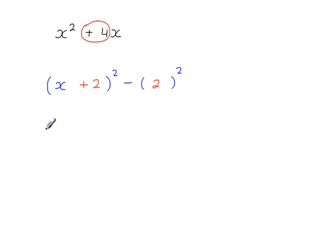This is what we call completing the square. So you've got x plus 2 squared. That's a minus, this will be a minus, 2 squared is 4. There you go.